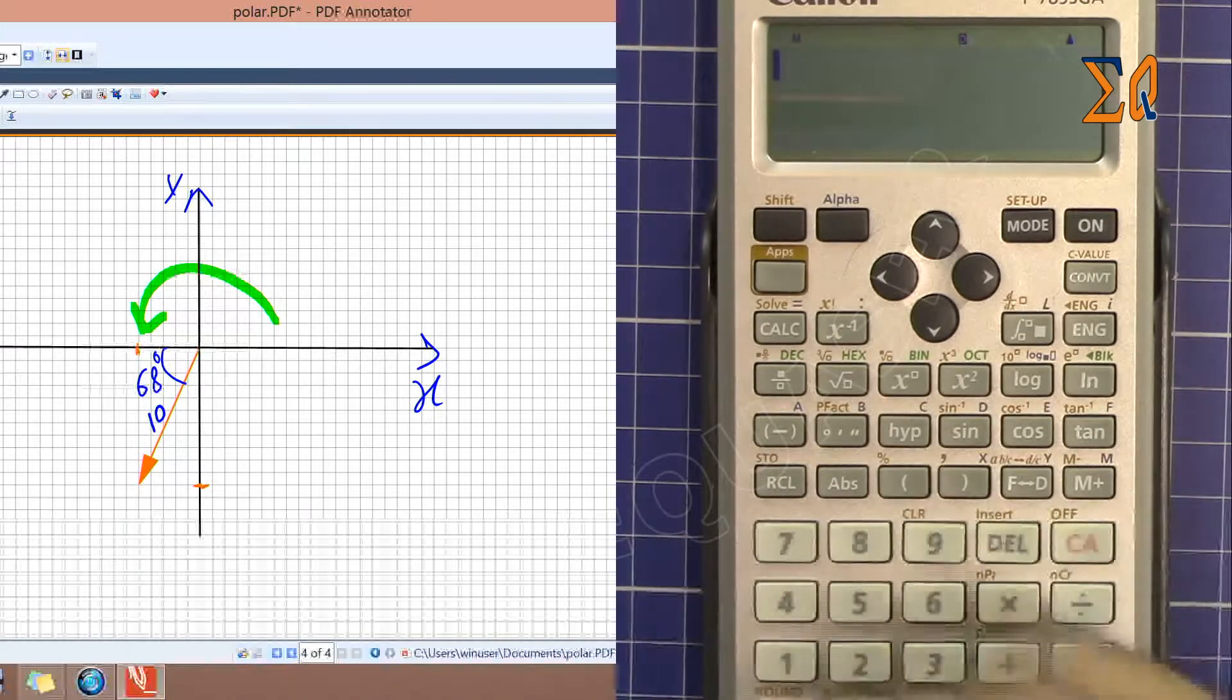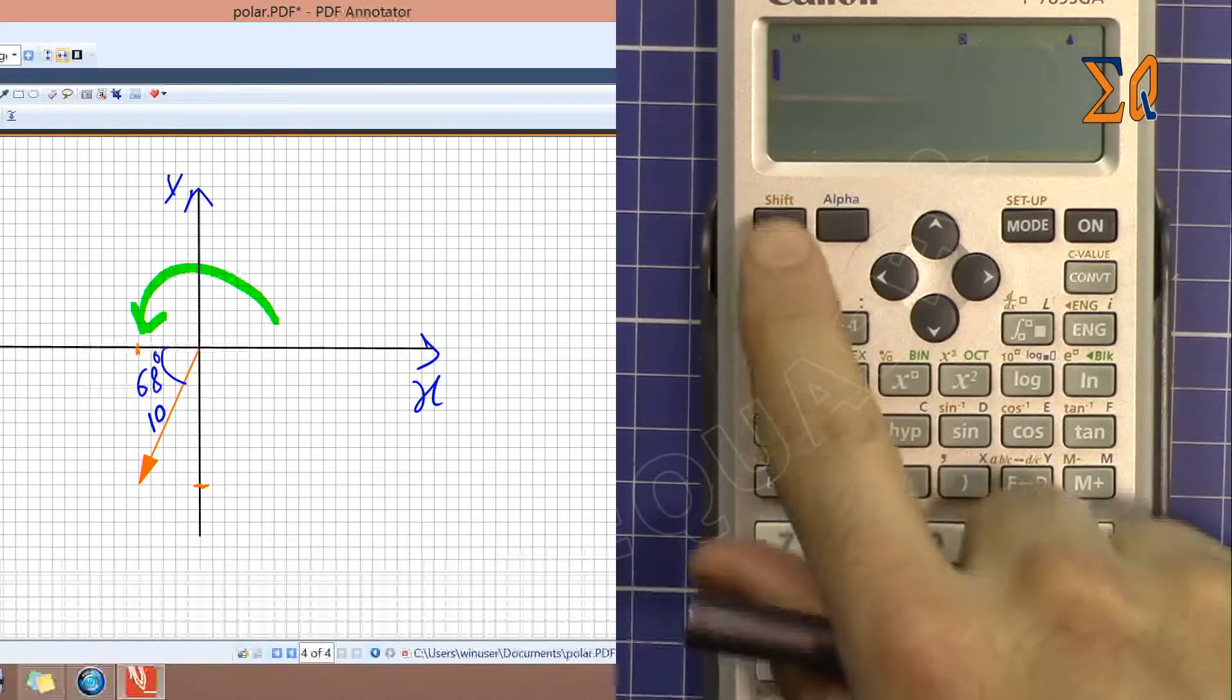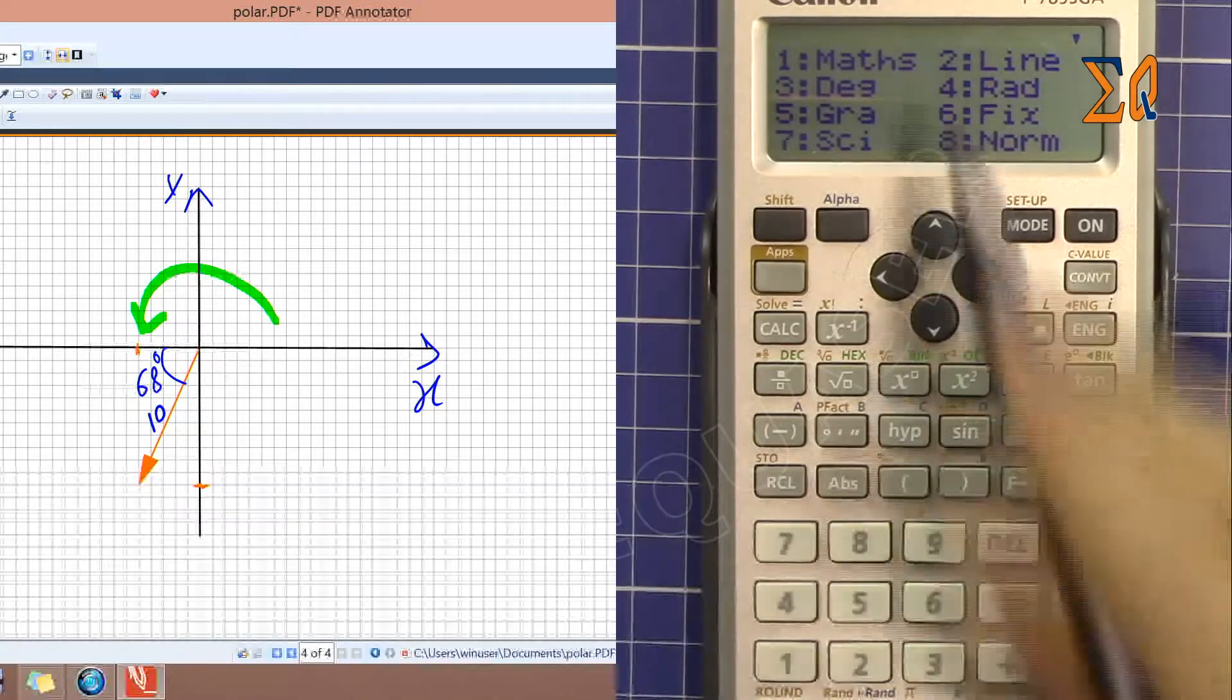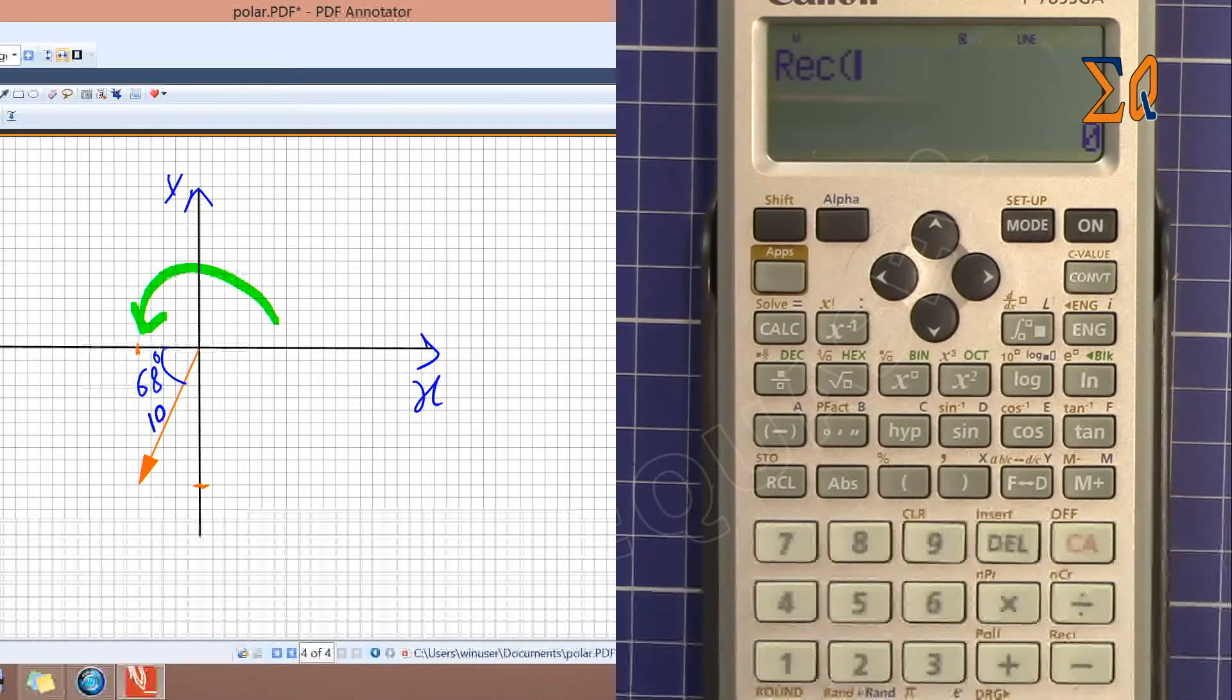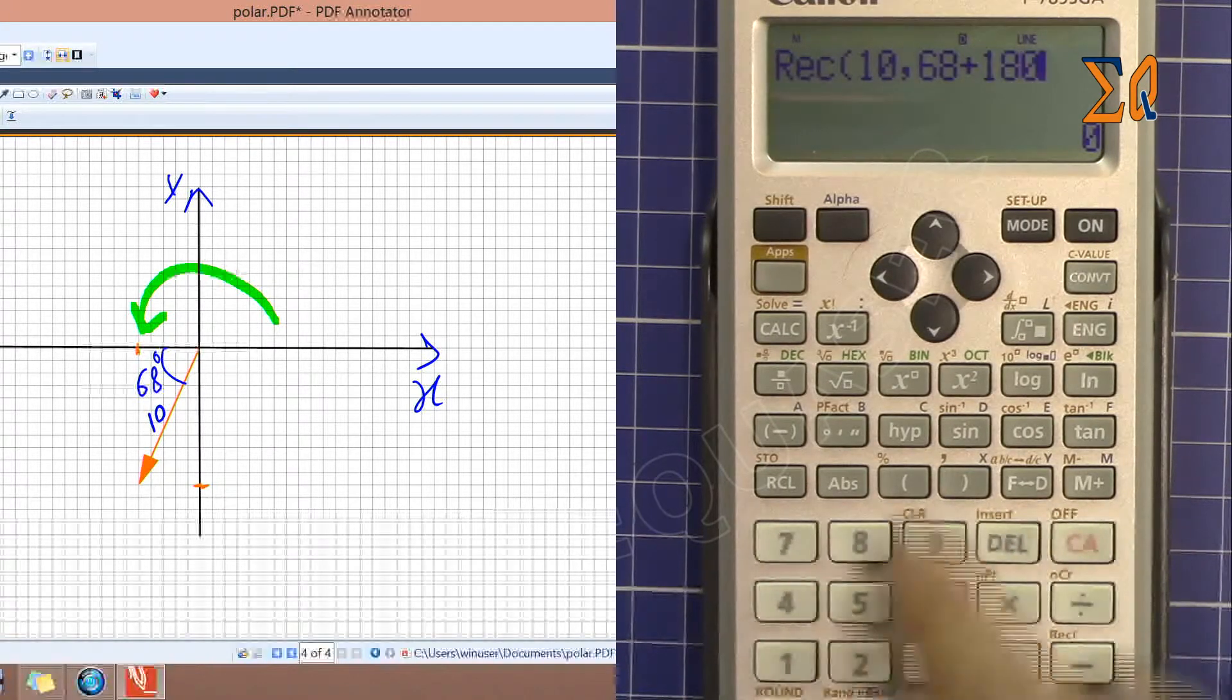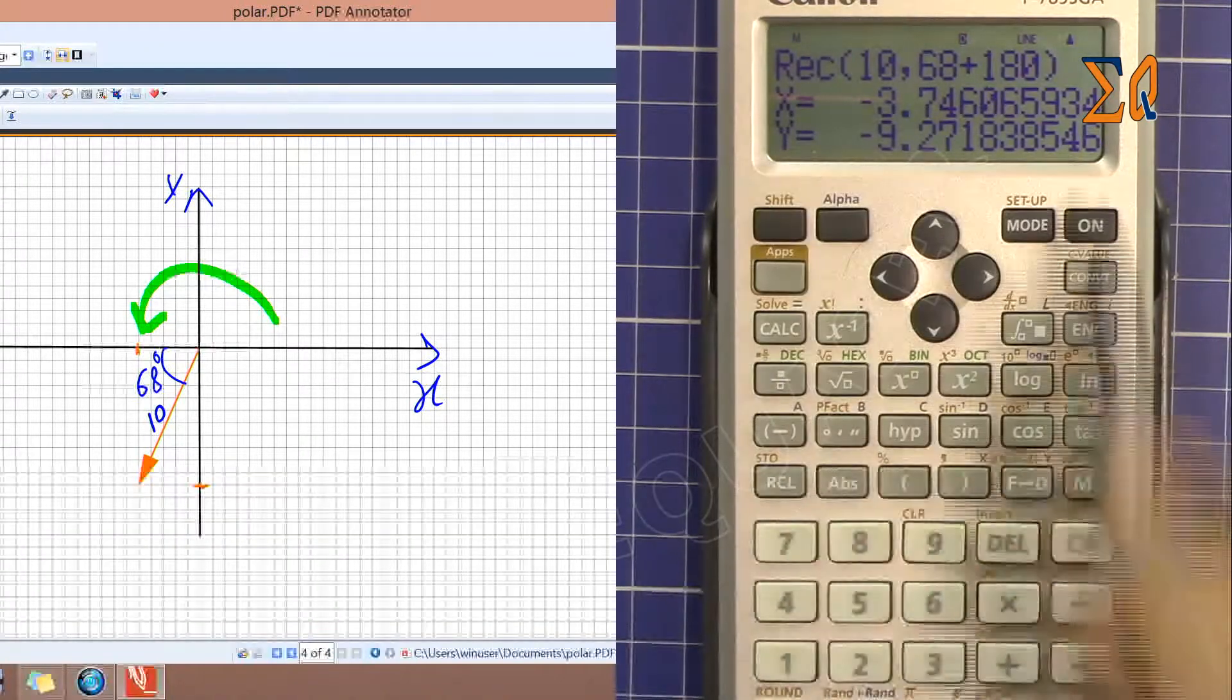If you want to set this by default to display those values properly for conversion of coordinates, press shift setup, go to line number two. Now let's do it. Recall and then 10, shift comma 68 plus 180. This way you don't have to press it, it shows x and y on the screen.